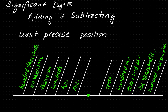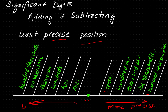When adding and subtracting significant digits, we always use the least precise position. If we have a number with a decimal, anything to the right of the decimal is more precise. The further away you are from the decimal, it's going to be more accurate — hundred thousandths is more accurate than the tenths place. Anything to the left of the decimal is least precise, so hundred thousandths is least precise than the ones place.